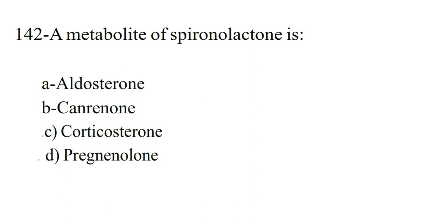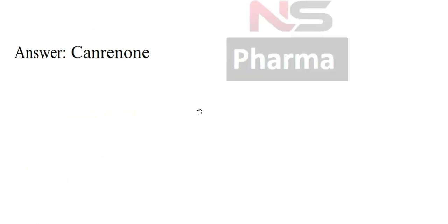Next question. A metabolite of spironolactone is: Option A Aldosterone, Option B Canrenone, Option C Corticosterone, Option D Pregnenolone. Answer: Canrenone.